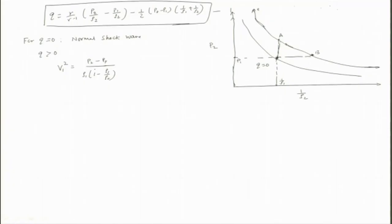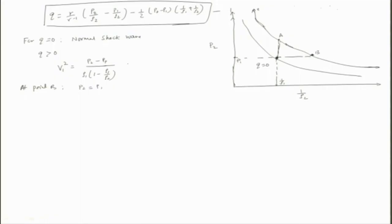At point B, P1 and P2 are the same, so therefore V1 will be 0. And if V1 is 0, then what will V2 be? V2 also will be 0, because V2 squared equals (P2 minus P1) times rho2 divided by (rho2 over rho1 minus 1). Since P2 equals P1, this gives zero — which is not a physically meaningful combustion solution.